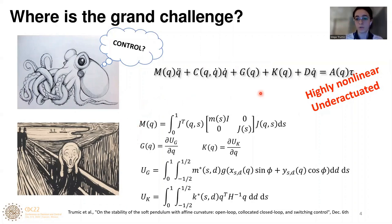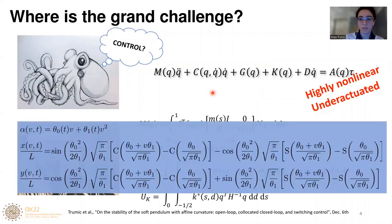Moreover, it is also inherently underactuated. Here you can see the kinematics of one pretty simple soft robot that we're going to consider today, and the amount of non-linearities even for this simple system is quite amazing.